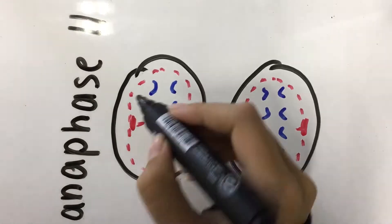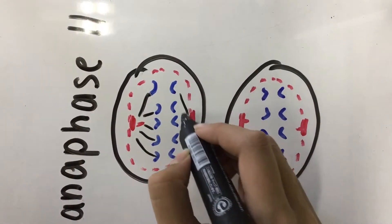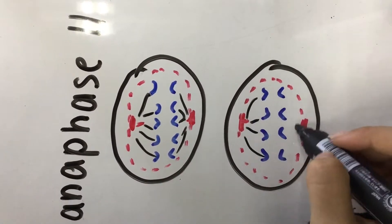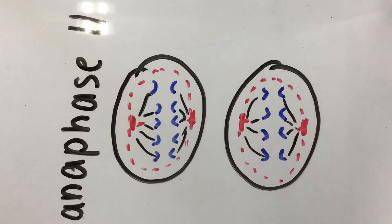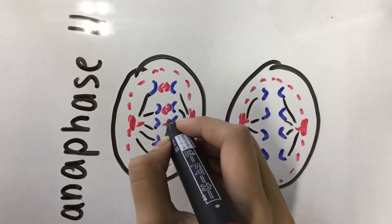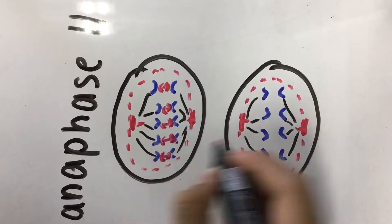Motor proteins begin to pull on ropes and the chromosomes split into individual chromosomes. This is the stage anaphase 2.